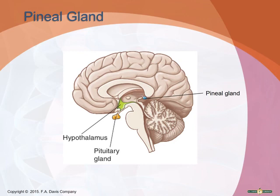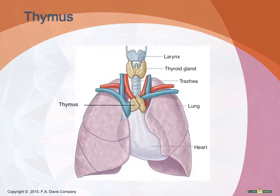The pineal gland is located on the roof of the brain's third ventricle. It produces melatonin, a hormone whose levels rise at nighttime when there's no sunlight and fall during the day. High melatonin levels trigger sleepiness, making it a key factor in your sleep-wake cycle. It may also regulate the timing of puberty.